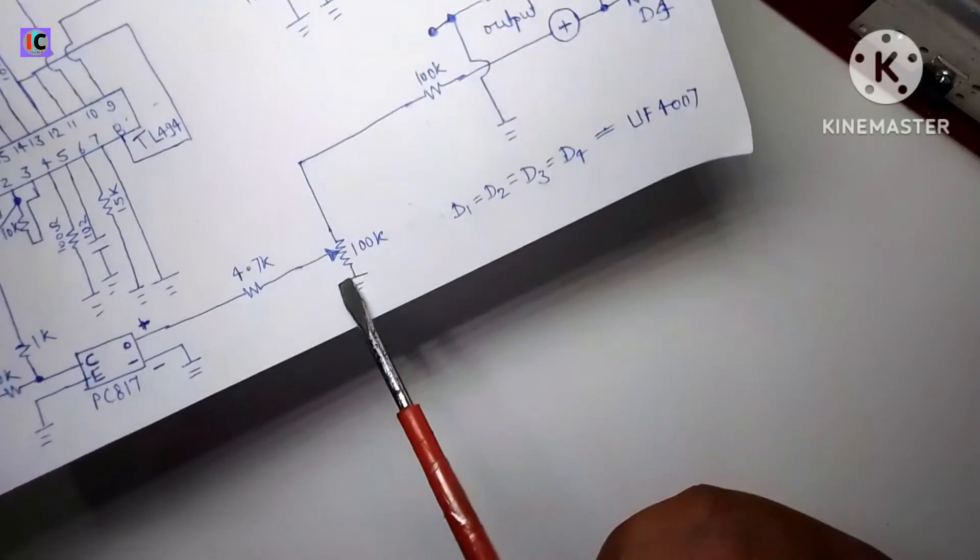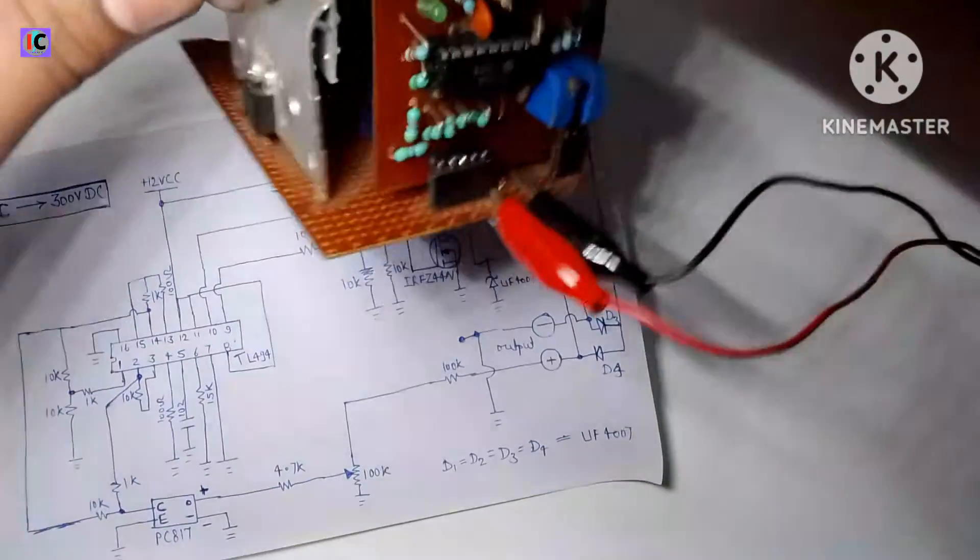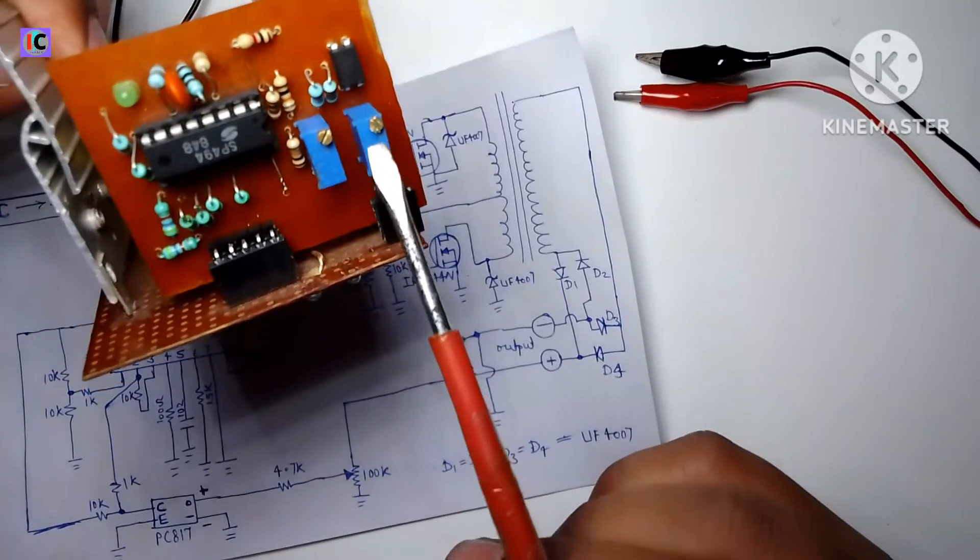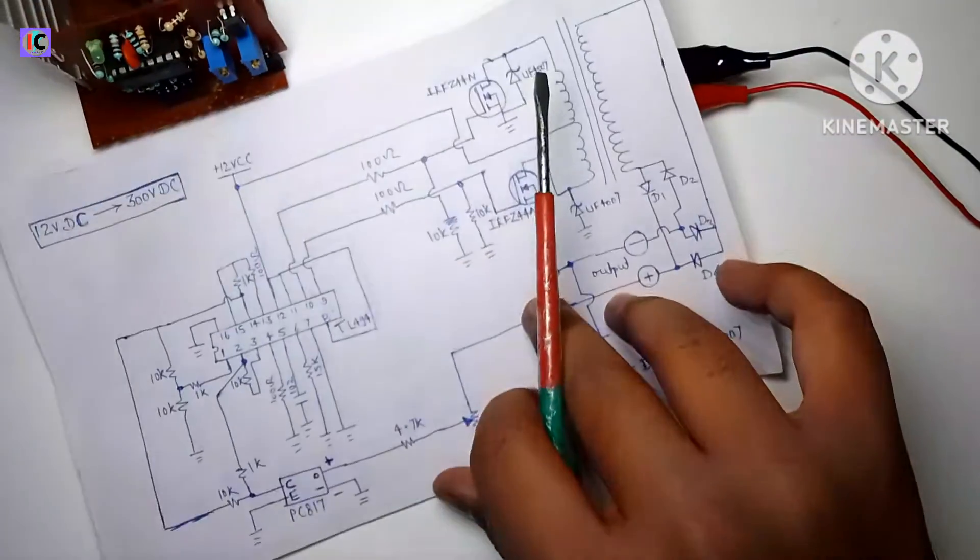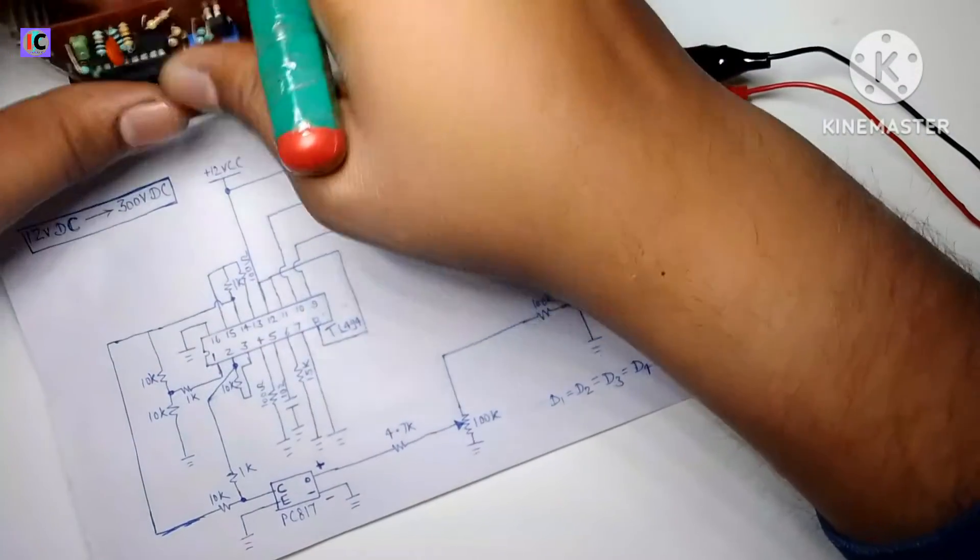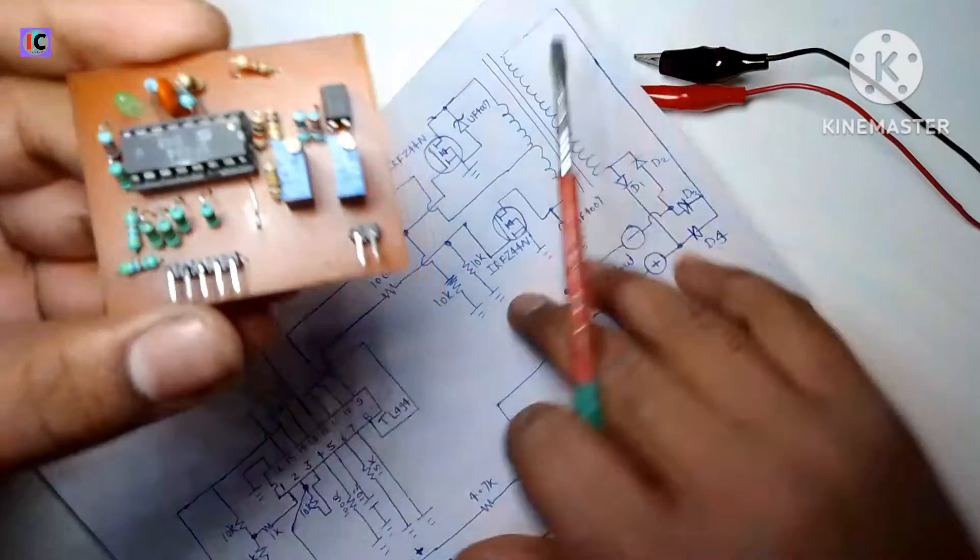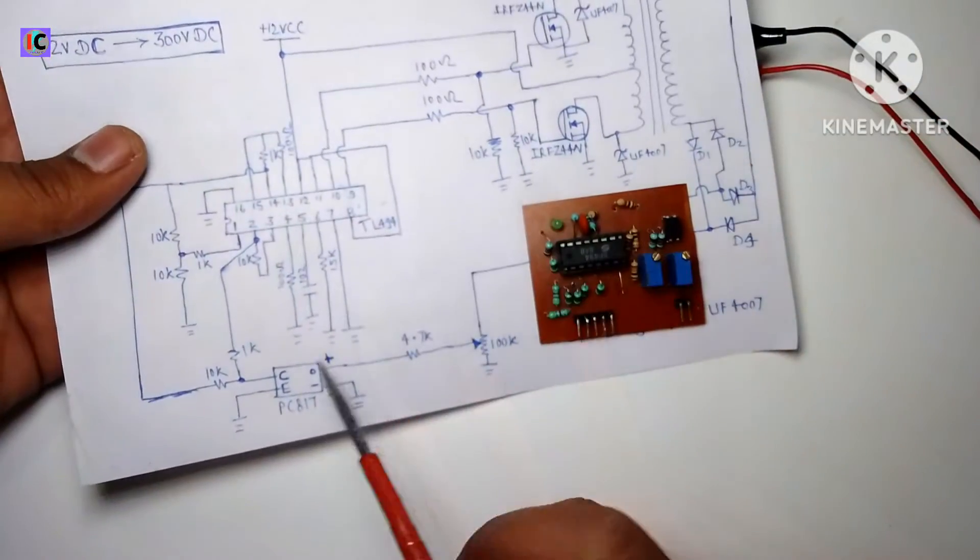from 100 kilo ohm resistor and this is the 100 kilo ohm potentiometer which is here. This is the potentiometer which controls the output voltage like this. And if I remove the module like this, also the